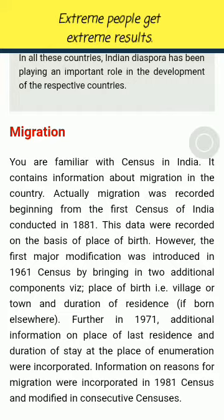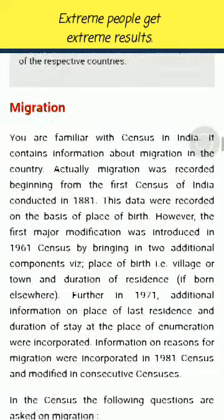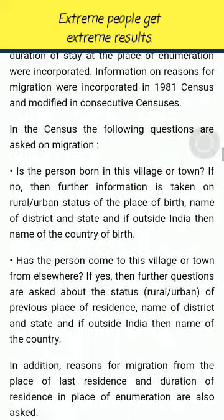Migration was recorded beginning from the first census of India conducted in 1881, on the basis of place of birth. The first major modification was introduced in the 1961 census by incorporating two additional components: place of birth (i.e., village or town) and duration of residence if born elsewhere. In 1971, additional information on place of last residence and duration of stay at the place of enumeration were added. Information on reasons for migration were incorporated in the 1981 census and modified in consecutive censuses.